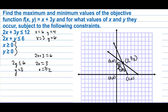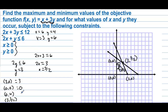Now we have four vertices of the feasible region and we evaluate the objective function at each. At (3, 0): 3 + 0 = 3. At (0, 0): 0. At (0, 4): 12. At (3, 3/2): 3 + 3(3/2) = 3 + 9/2 = 6/2 + 9/2 = 15/2 = 7.5.